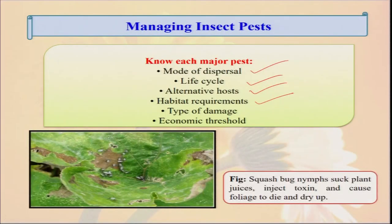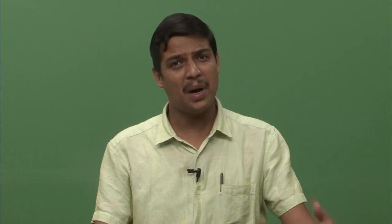There is also the concept of habitat requirement, type of damage, and economic threshold. Economic threshold is very important. Suppose there is an insect — it is not 100 percent necessary to control 100 percent of the insect pests and diseases. Suppose there is a minor attack of 5 to 6 percent, and it is causing a crop loss of maybe 5,000 rupees per hectare. But if you apply different types of pest management practices your cost is 10,000 rupees. So by spending 10,000 rupees extra, you are saving only 5,000. That is not advisable. If the amount of money or labor energy you are using to control the pest exceeds the yield loss being controlled, then only we should go for pest control. That is called the economic threshold level.